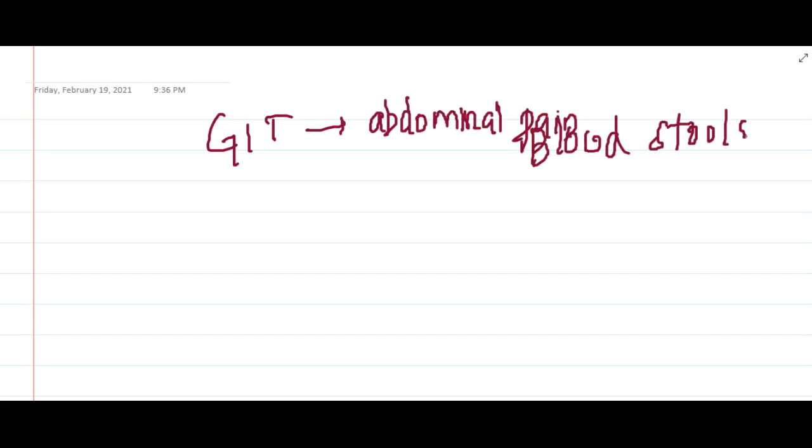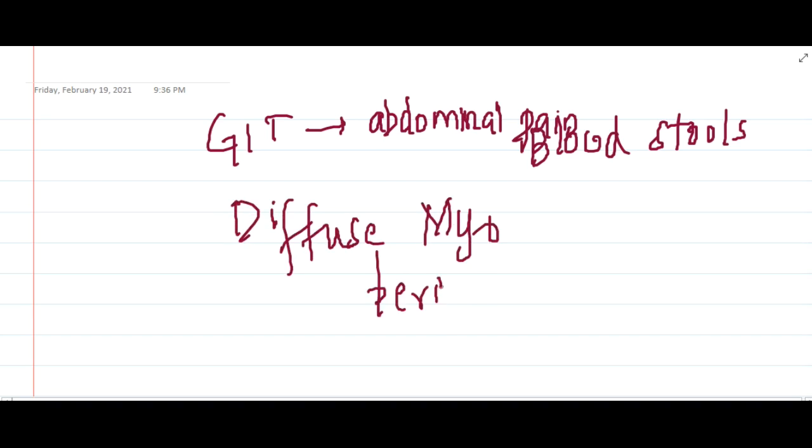If there is GIT involvement then the patient will present with abdominal pain and bloody stools. You will also see presence of diffuse myalgias and peripheral neuritis in these lesions.